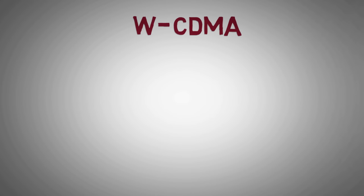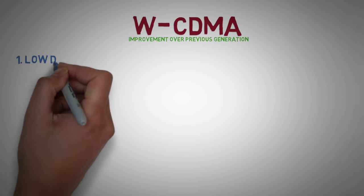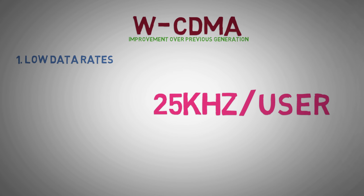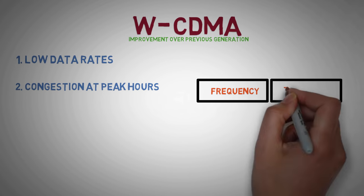WCDMA improved upon some of the problems of earlier generations. First, low data rates—in GSM, effective bandwidth for a user was only 25 kHz. Second, congestion at peak hours, as the frequency chunks and time slots were very limited.